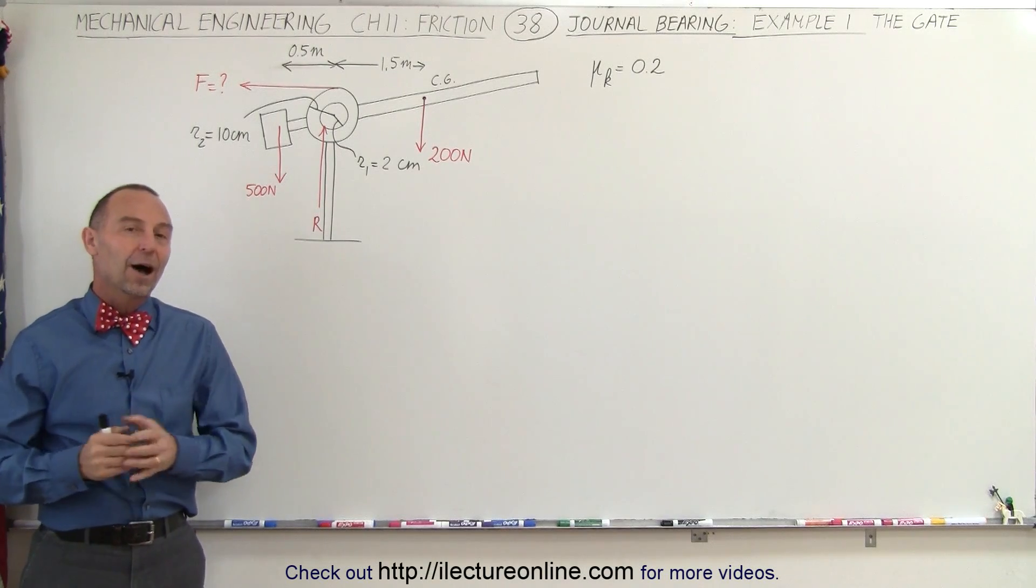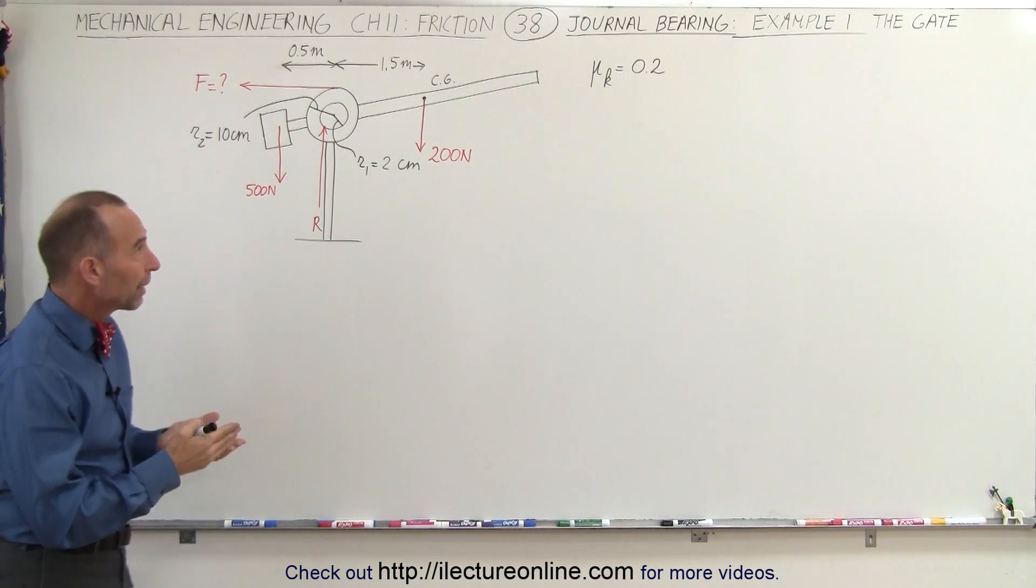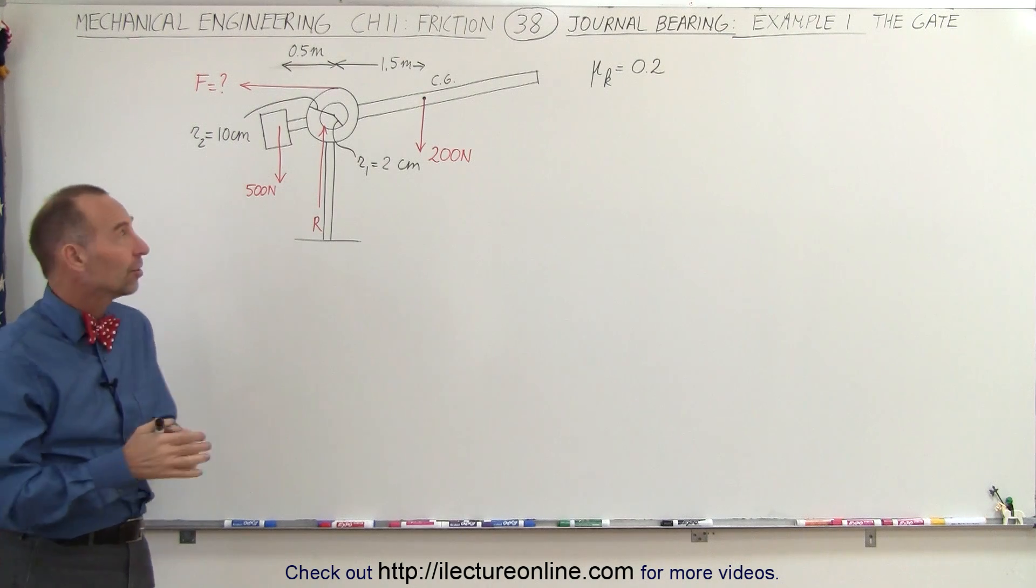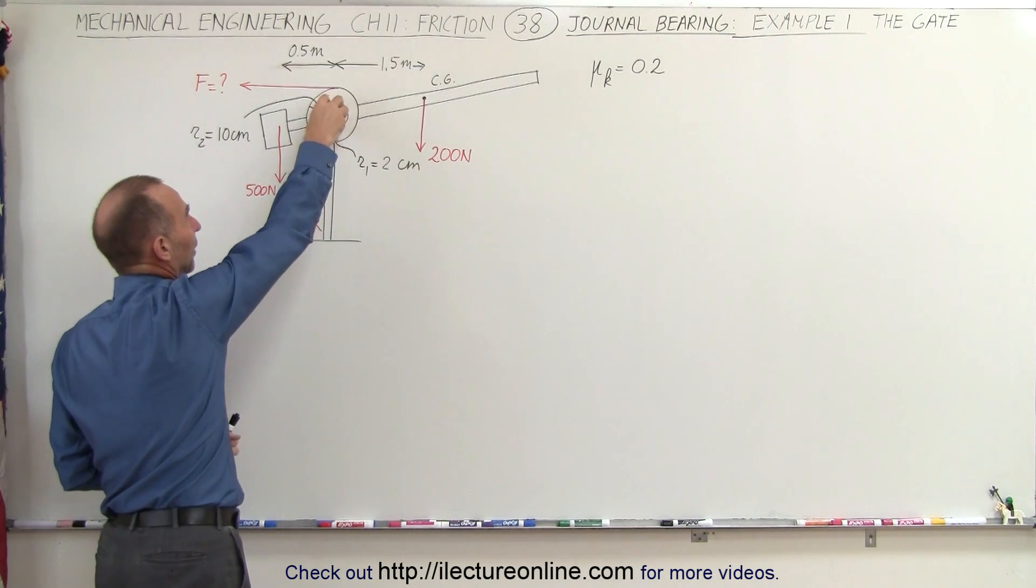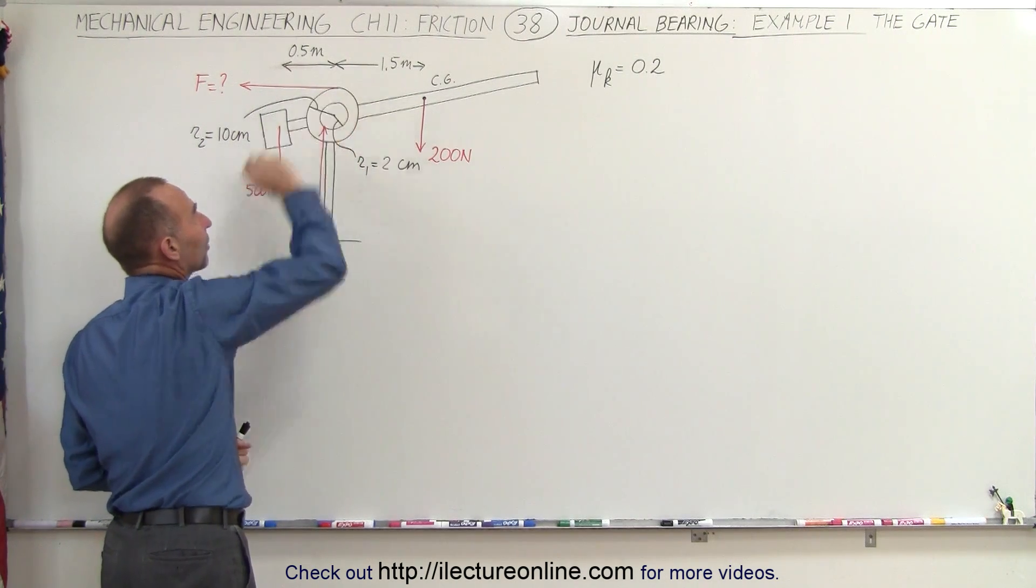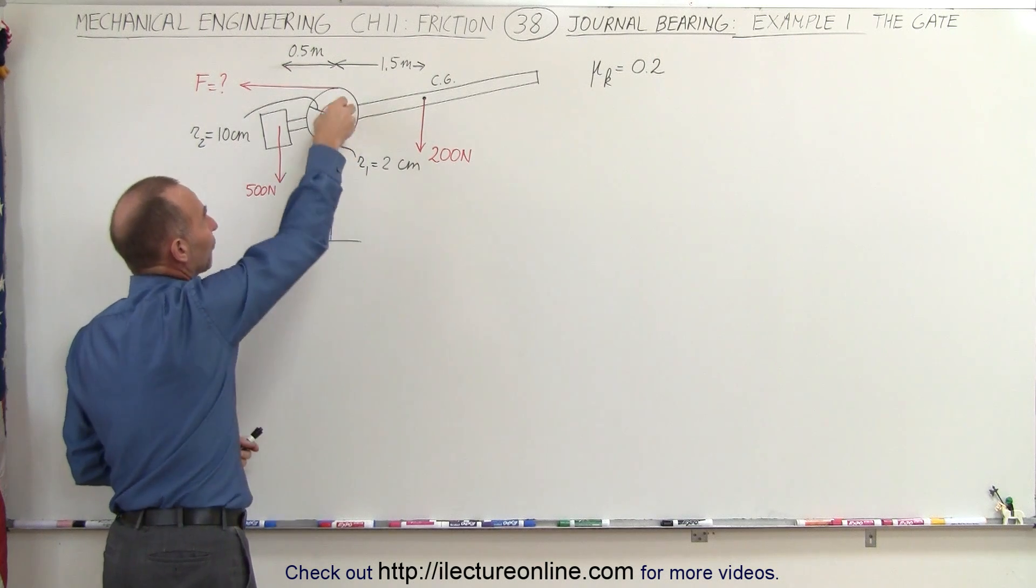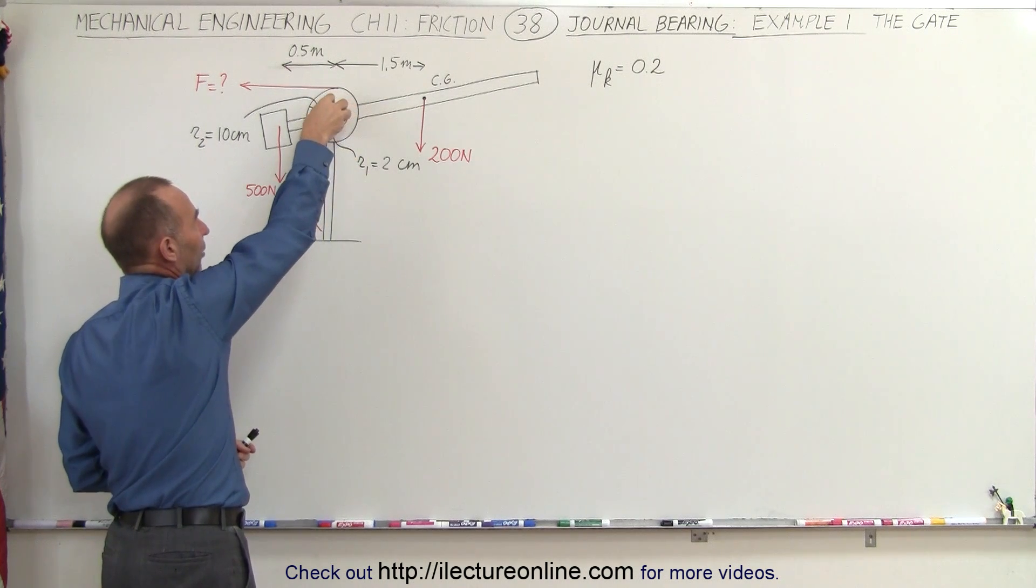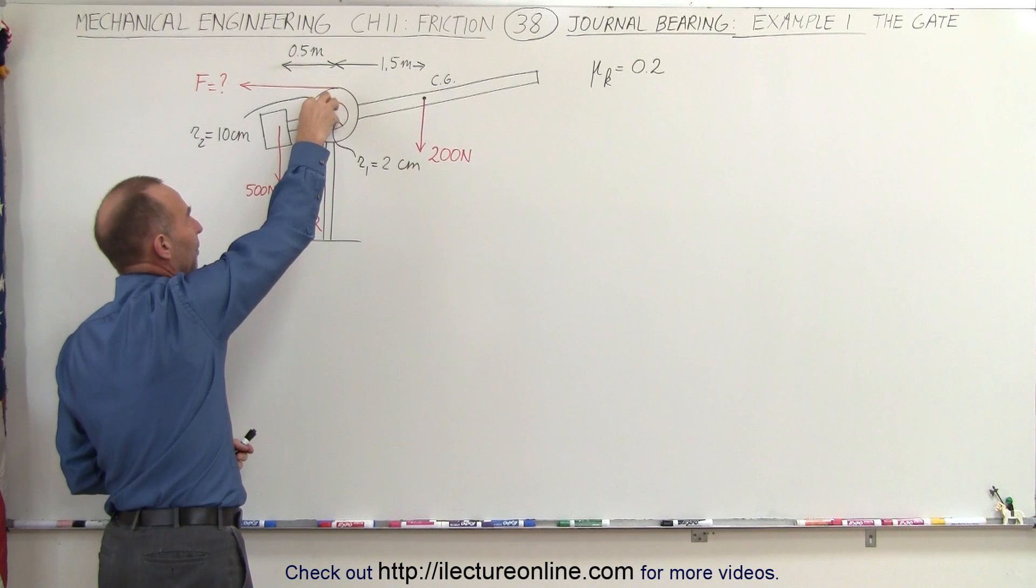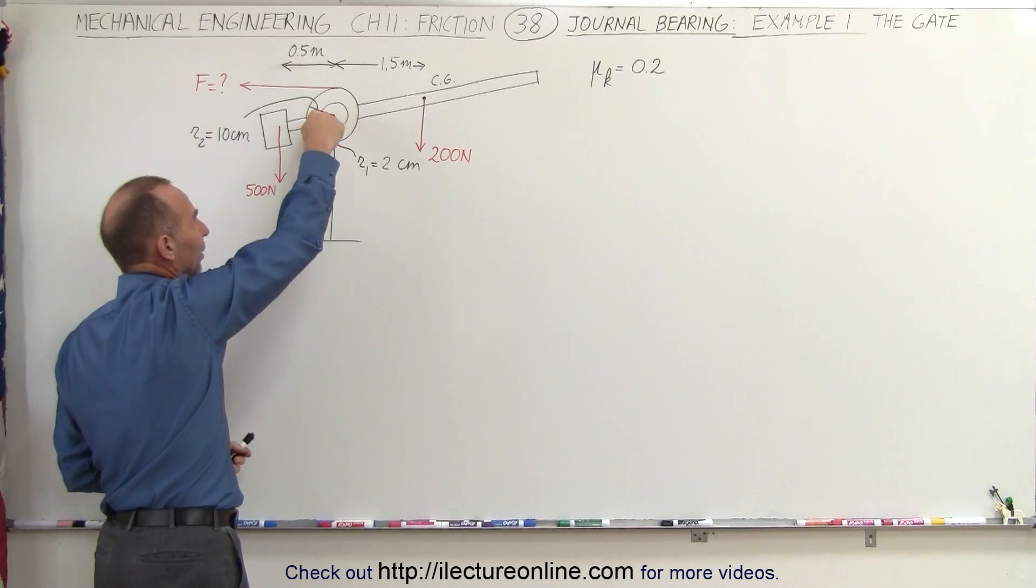Welcome to iLectraLine. Our first application of the journal bearing is the gate. This gate here is attached to a bearing that rotates inside the housing here, and the friction between the bearing and the housing causes the bearing to roll up until it begins to slide.